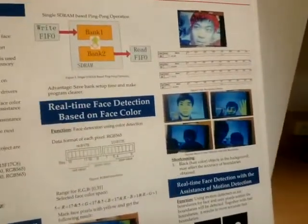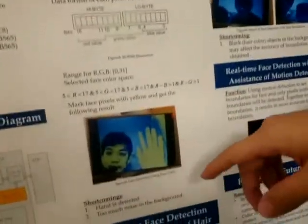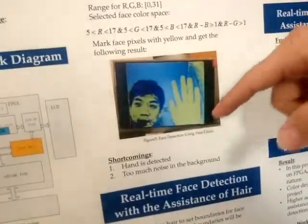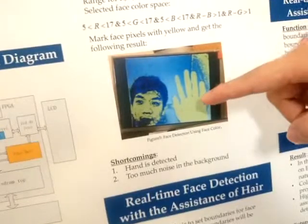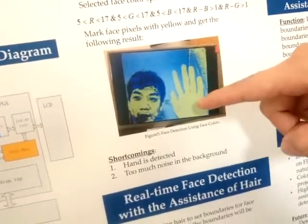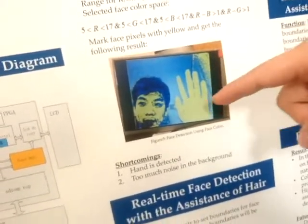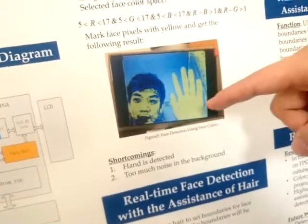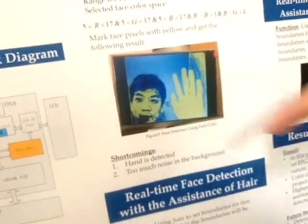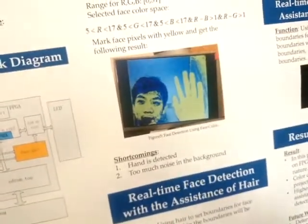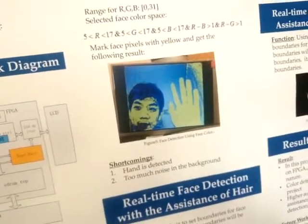However, there is a problem. As you can see in this picture, the hand is also detected because the hand is also face color, the same as the face. And there are a lot of noises because I didn't find a very exact, accurate color space.